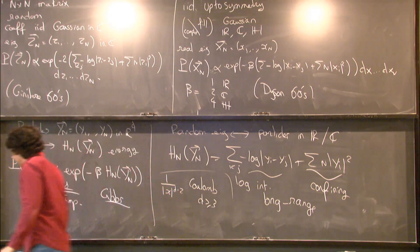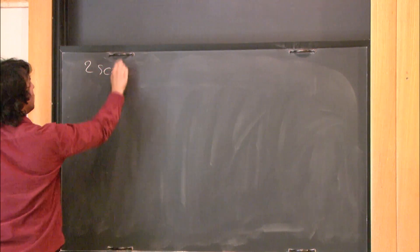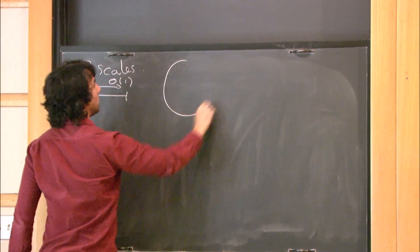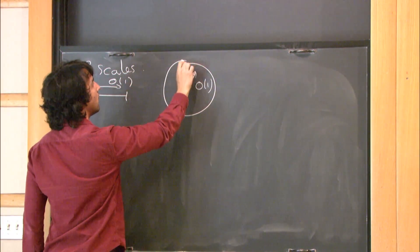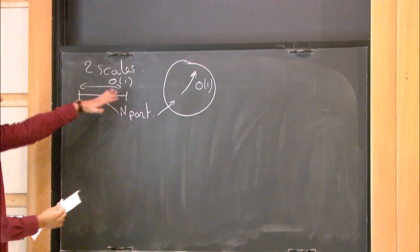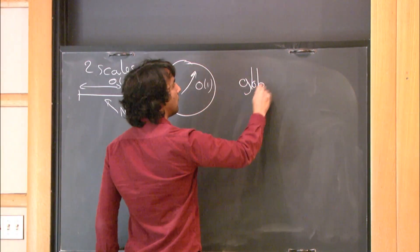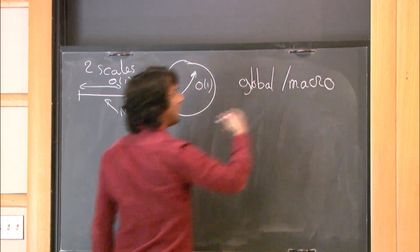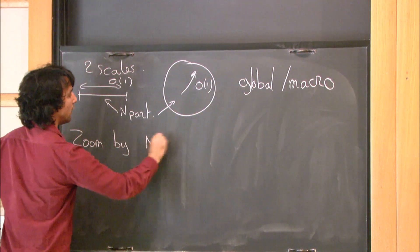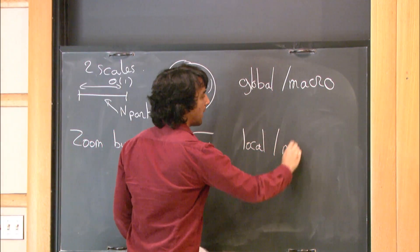So let me tell you some things that we know about those systems. There are two relevant scales. The first scale is when, so I will do dimension one and dimension two. When you have n particles in a compact domain. So at a big O of one, size big O of one. That's the global scale, or the macroscopic scale. And then you can zoom in. So if you want to reach the inter-particle distance, you have to zoom by n. Or square root of n, depending on your dimension. And then you reach the local scale, or microscopic scale.